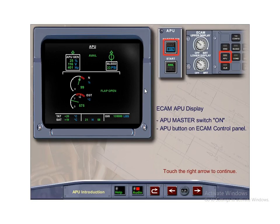When the APU Master switch is depressed, the ECAM APU page is automatically displayed if ground power or main generator power is connected to the aircraft, and will remain displayed throughout the start sequence. It will disappear 15 seconds after the start cycle is complete. The ECAM APU display page can also be called up by pressing the APU button on the ECAM control panel located on the pedestal.